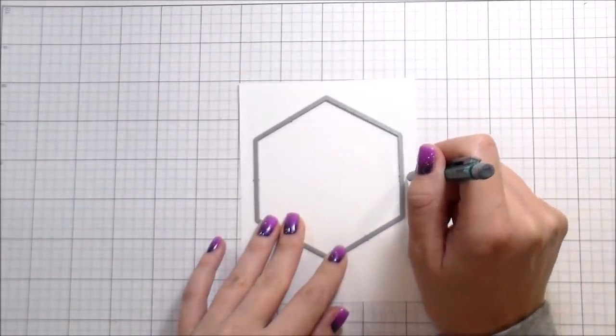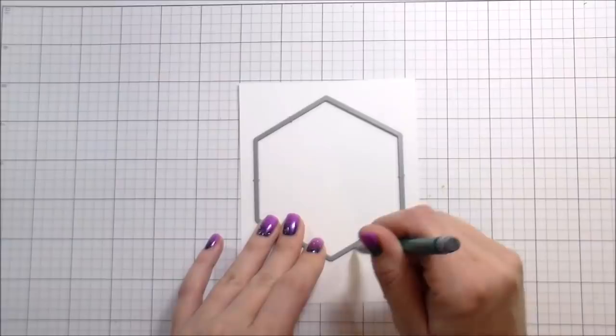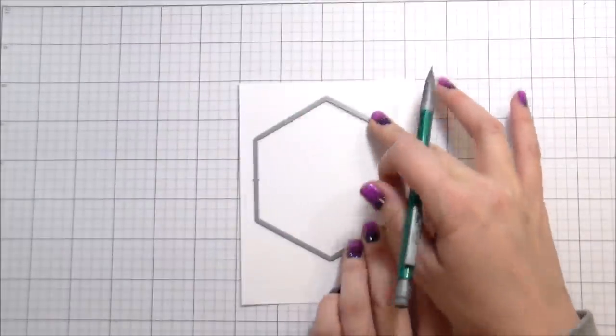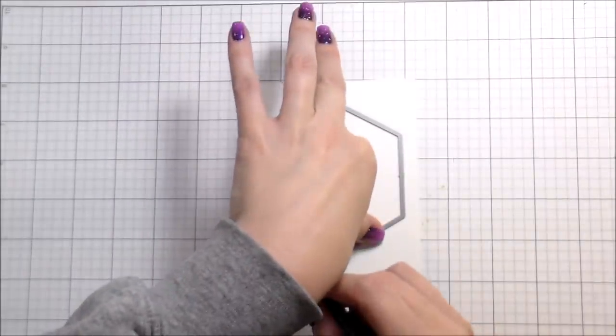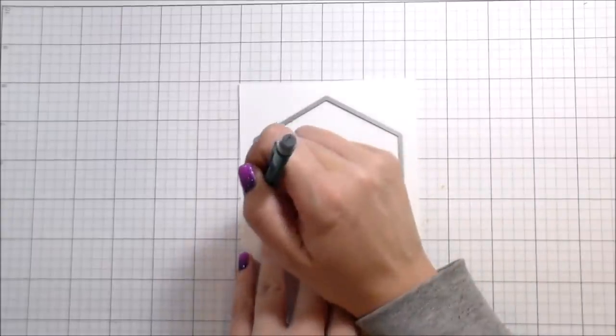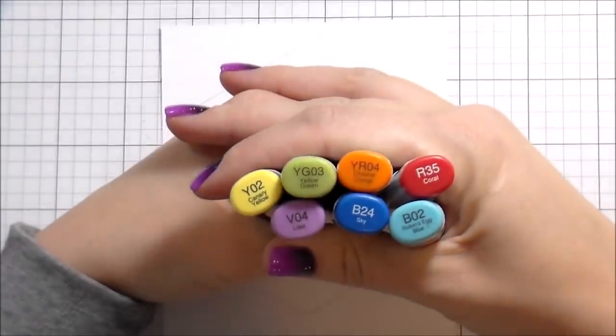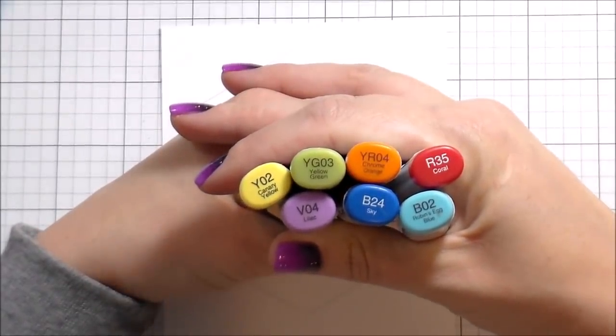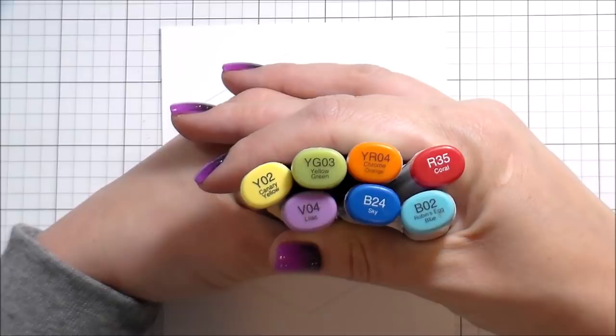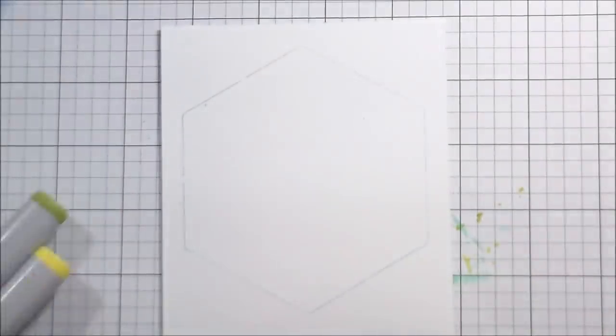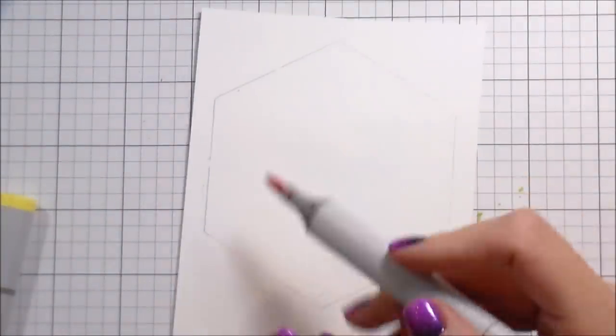First thing first, I picked the hexagon that was going to fit my card front and I'm tracing it on a piece of white W Plus Nine cardstock so I know where I need to color my rainbow.